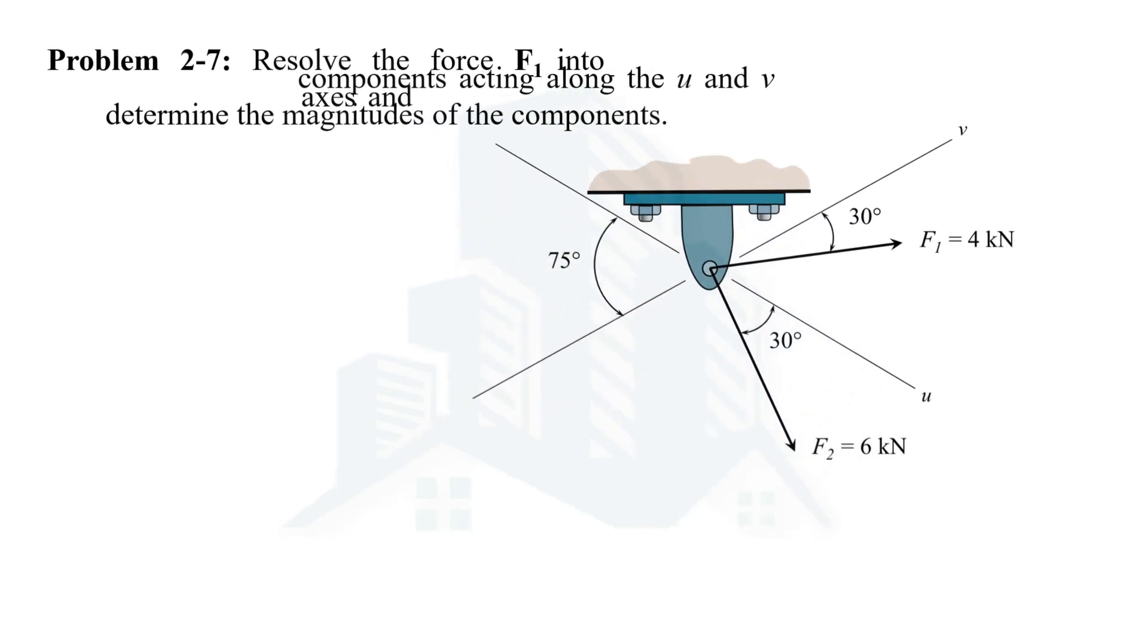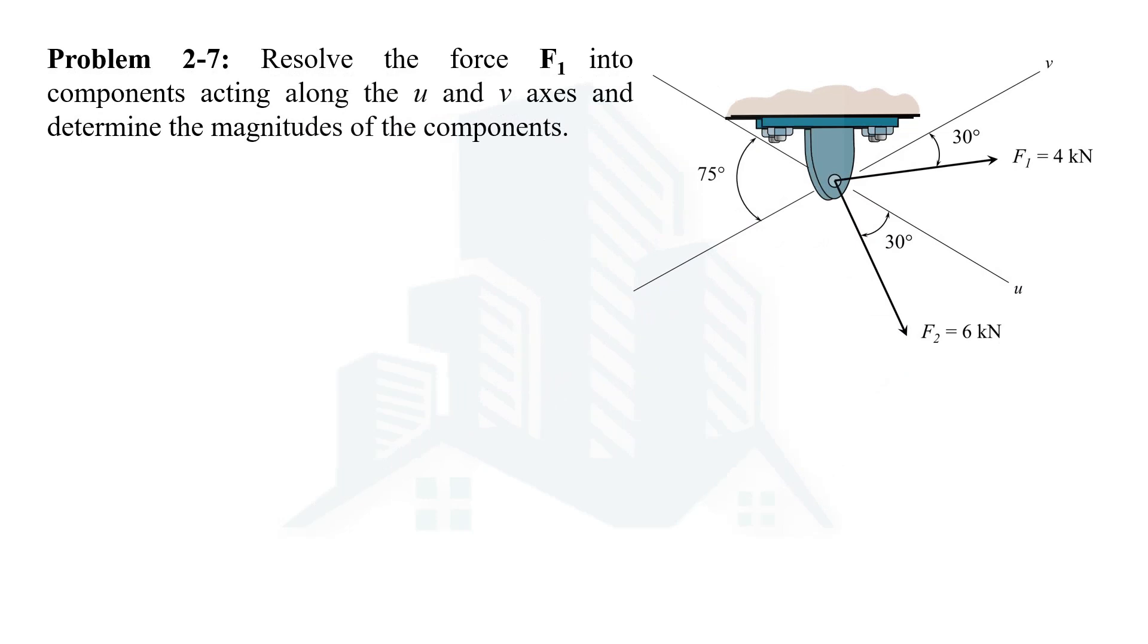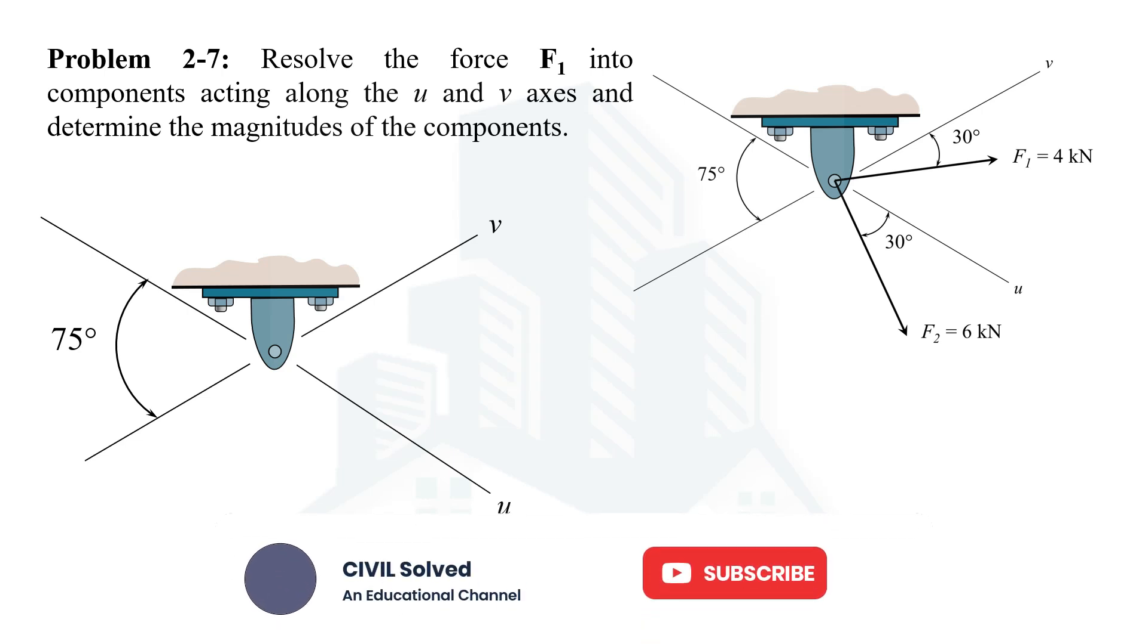Let's solve this problem considering the object on which the F1 force is applied. These are the axes which are given to us, U and V. These axes make an angle of 75 degrees with each other. The F1 force has a magnitude of 4 kN and makes an angle of 30 degrees with the V axis.